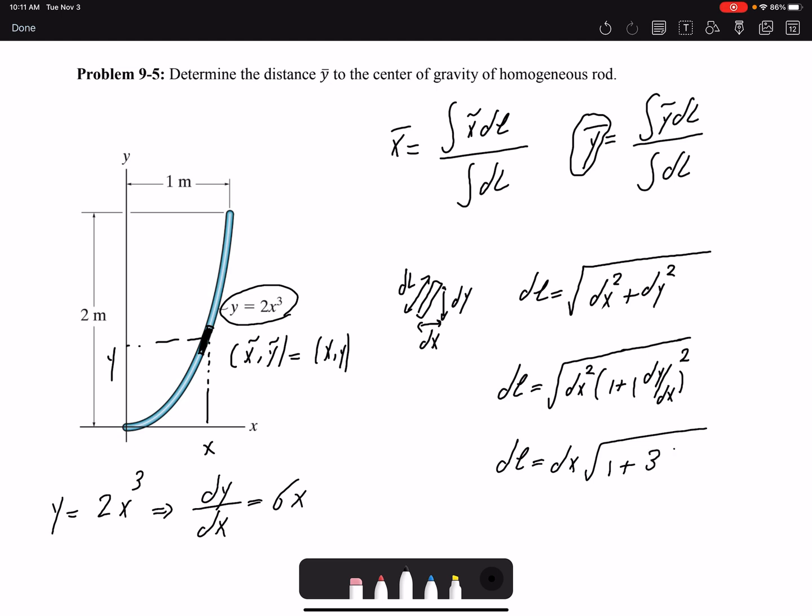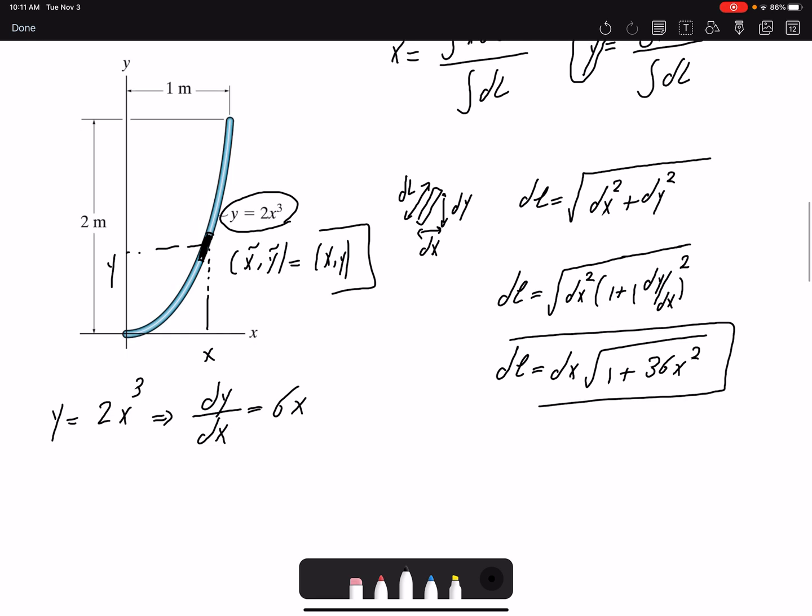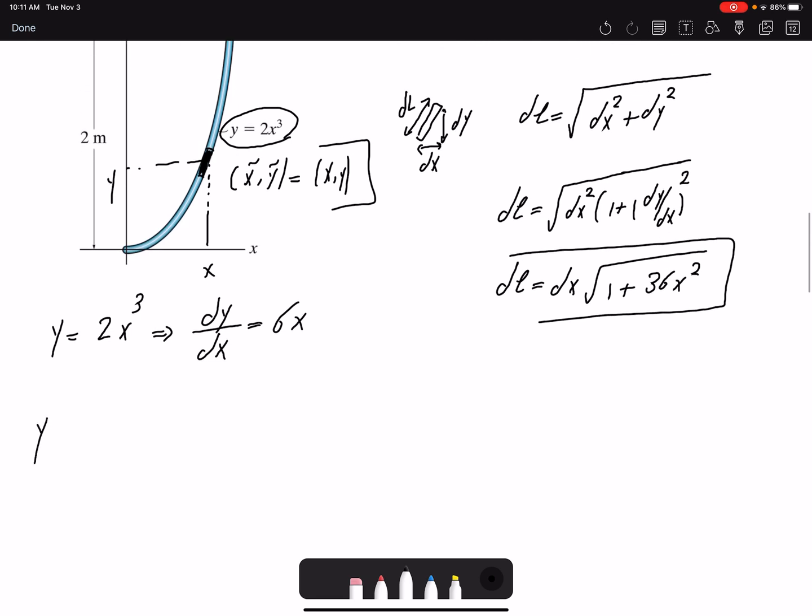Then here in this equation I have 6x², so 36x². So I found dl and I found x̃ and ỹ, so I can write my equation. So y̅ is ỹdl over dl. dl is √(1 + 36x²)dx and x is changing from 0 to 1 meter.